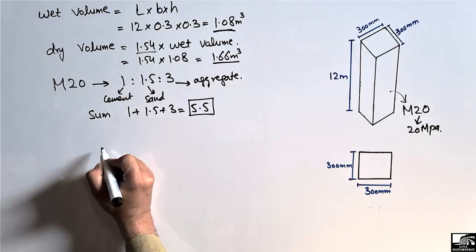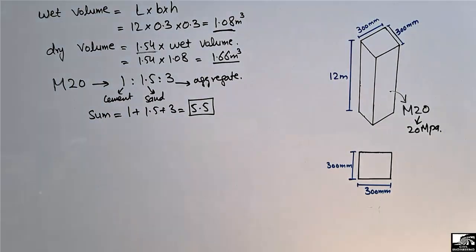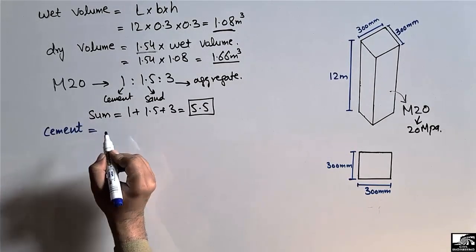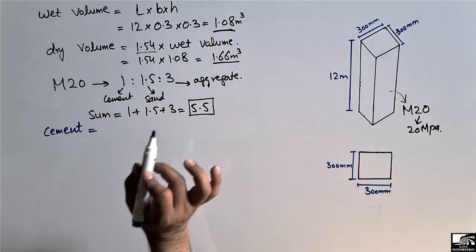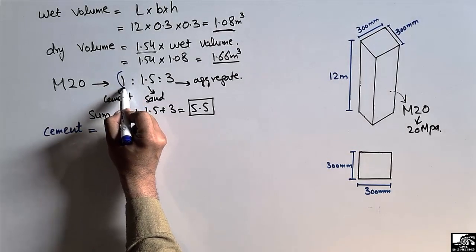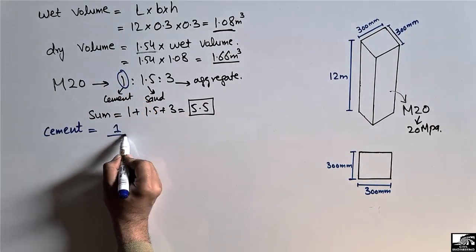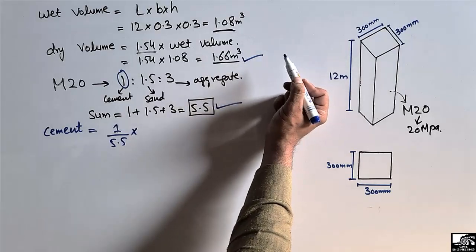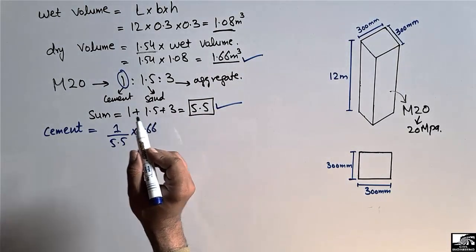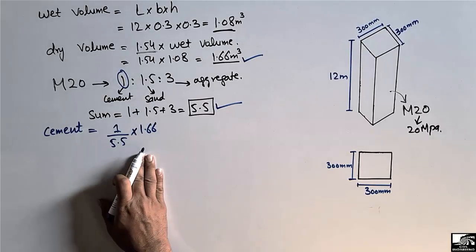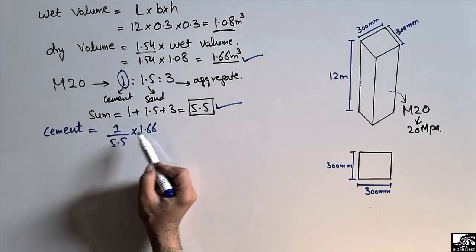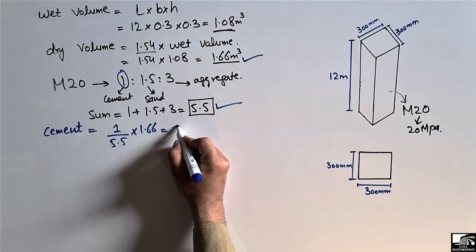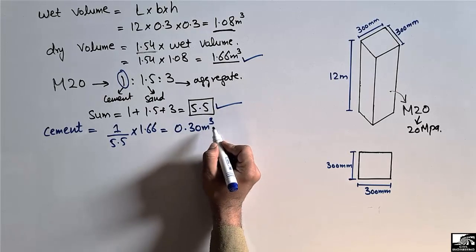To find the quantity of cement, we use the formula: (cement ratio / total ratio) × dry volume. That is (1 / 5.5) × 1.66, which gives us 0.30 cubic meters. This is the quantity of cement in cubic meters.